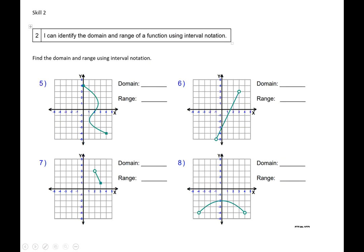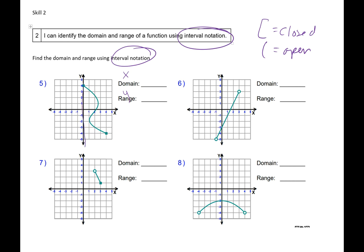Skill 2: I can identify the domain and range of a function using interval notation. We're going to focus on the interval notation — the parentheses and the bracket. It's a bracket if it's a closed dot or a solid function, and a parentheses if it is an open dot. Domain is your x's, range is your y's every single time. My smallest x value is 0 — it's closed, so I draw a bracket. My biggest x value is 4, and it's closed, so I draw a bracket. For the range, my smallest y value is negative 4 — I draw a bracket — and my biggest y value is 4, so I draw a bracket.